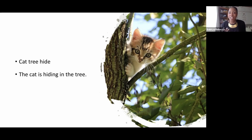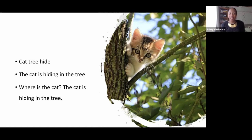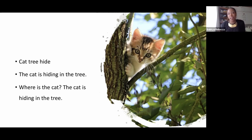An even better conversation would be this one. Where is the cat? The cat is hiding in the tree. In the third example, there is purpose. Someone is looking for the cat. Maybe the cat ran away from the house, so they ask, where is the cat? The cat is hiding in the tree. So in Total English A and B classes, we try to have more meaning — not just words, not just grammar, but meaningful communication.